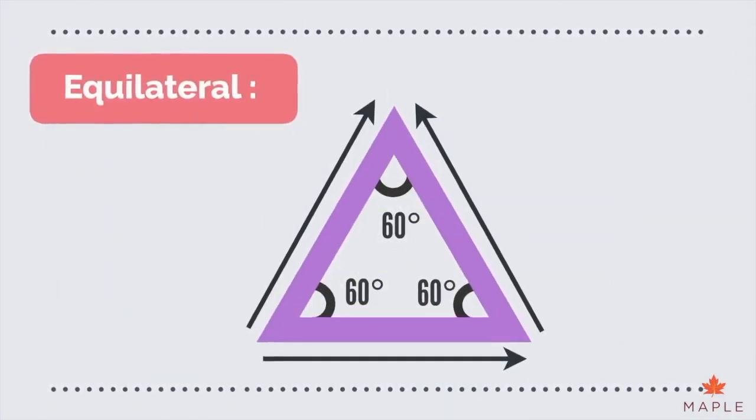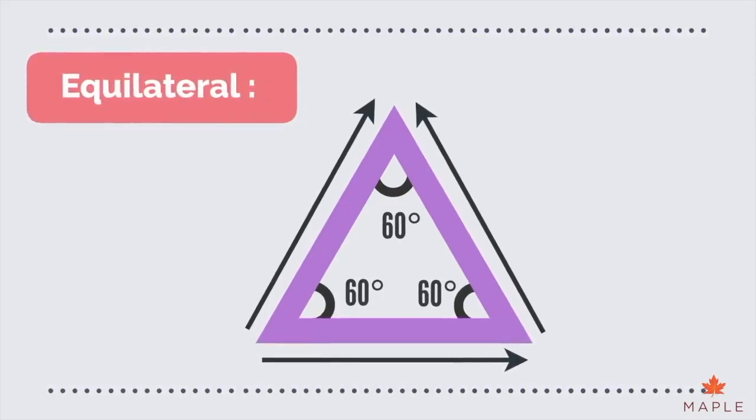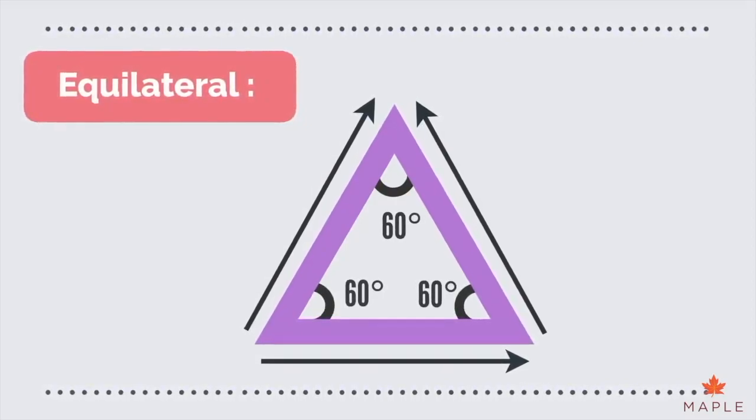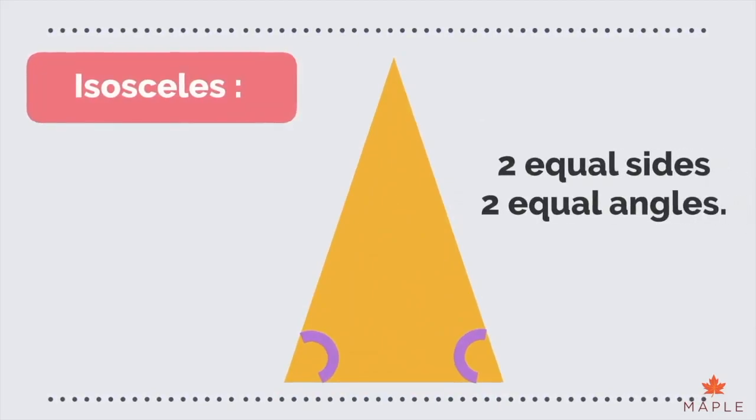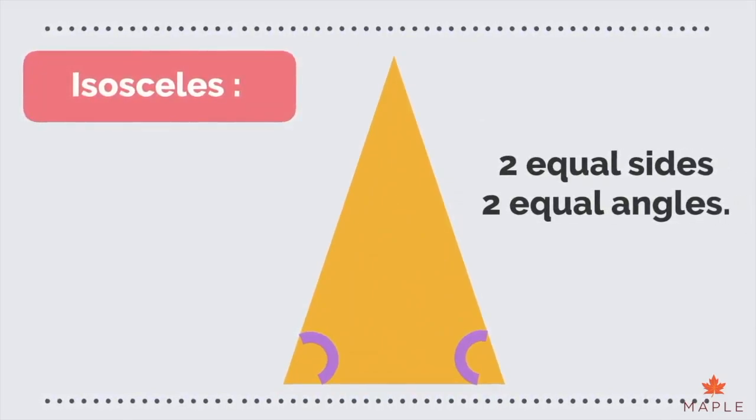Equilateral triangles have three equal sides and three equal angles of 60 degrees. Isosceles triangles have two equal sides and two equal angles.